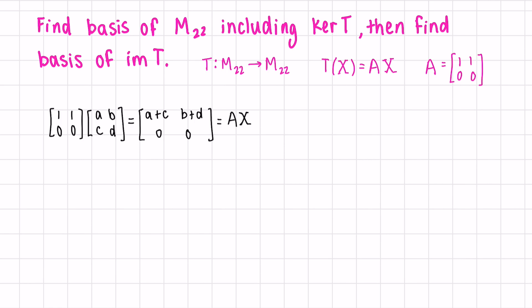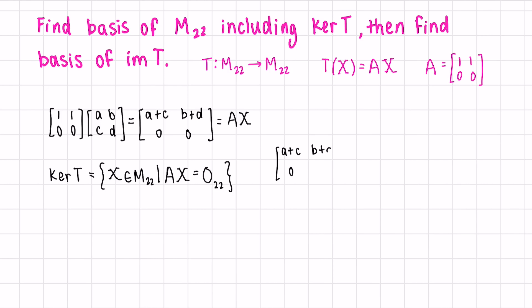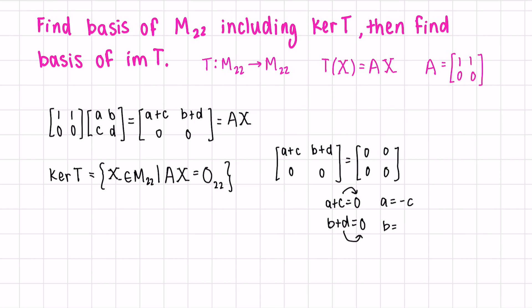Now what's the kernel of the transformation? Let's first write out the definition. The kernel of the transformation is in our original space — it's all matrices x such that when we apply the transformation A times x, we get 0, the zero matrix in M22, which is 0, 0, 0, 0. When is our matrix equal to the zero matrix? This will be true when A plus C equals 0 and when B plus D equals 0, meaning A equals negative C and B equals negative D.